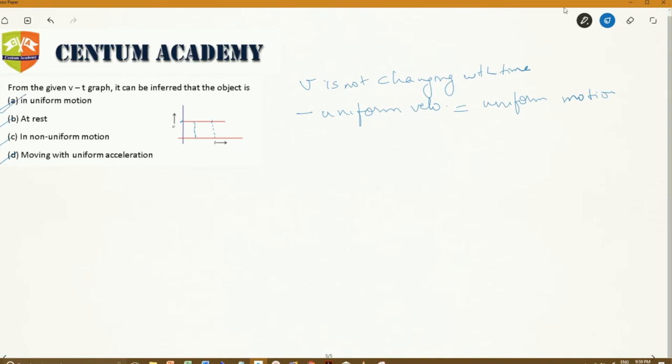Now let's also analyze other options and see what would be the case. How would the velocity time graph look like? In case of option B, that is at rest.